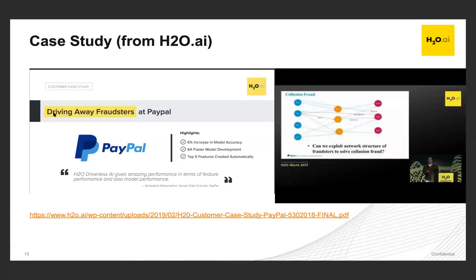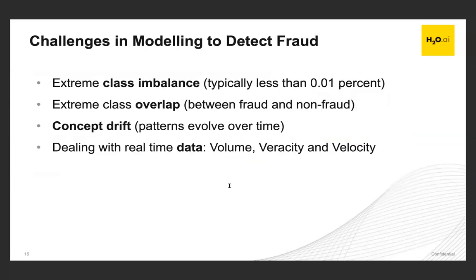Another example is a case study from our customer PayPal — collusion fraud — where both sellers and buyers collude together in an online transaction system to steal from PayPal. The case study and a video from H2O World are available on H2O's blog. These are some of the popular fraud use cases. Now let's look at the challenges in modeling to detect fraud.